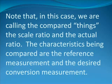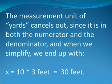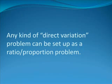But no matter which of these two ways we set the problem up, our solution process eventually leads to the following equation: X is equal to ten yards times three feet divided by one yard. The measurement unit of yards cancels out since it is both in the numerator and the denominator. And when we simplify, we end up with X equals ten times three feet is equal to thirty feet. Clearly, we should go back and check this, but for now we'll overlook that and go on to our next step.